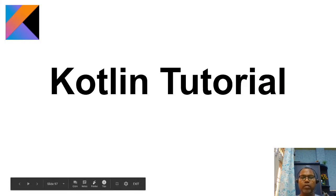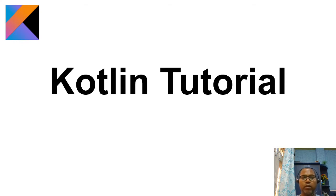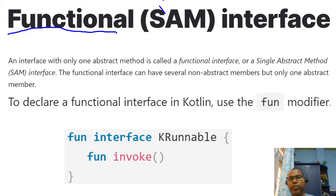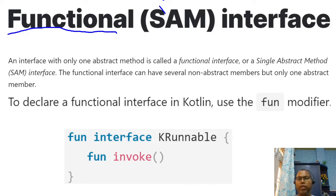Welcome. Let's start the Kotlin tutorial. Today I am going to discuss about the functional interface — what it means, how we can use it, and also how functional interfaces help us define lambda expressions. We'll go through some examples as well.